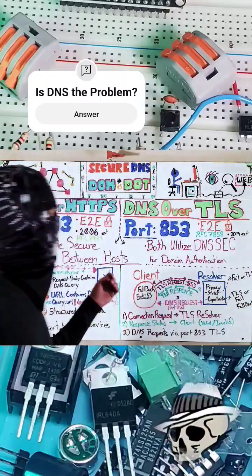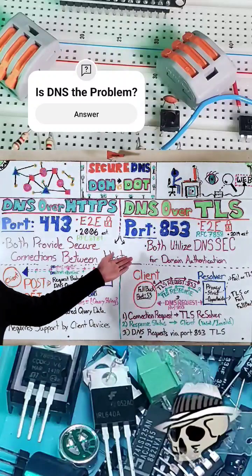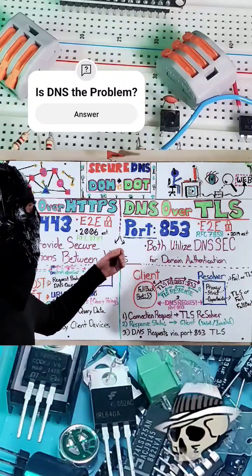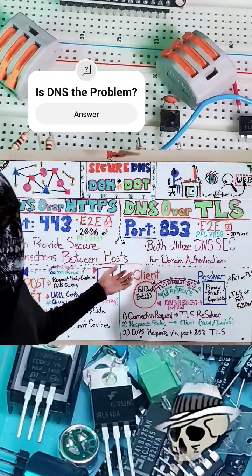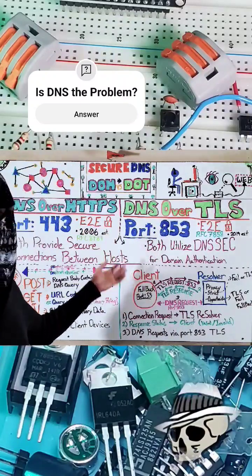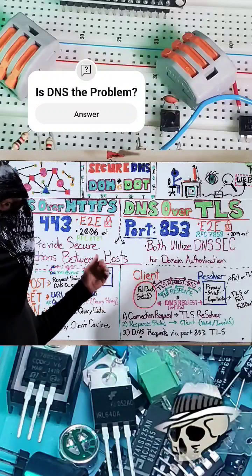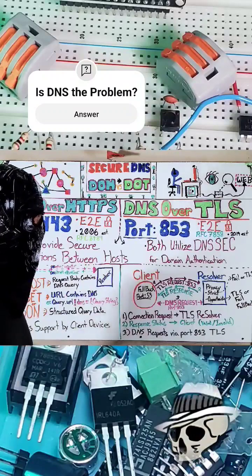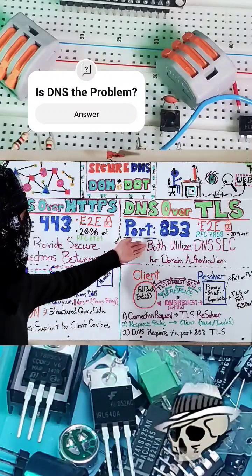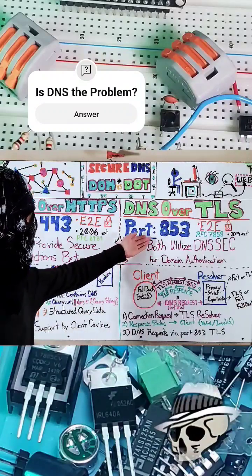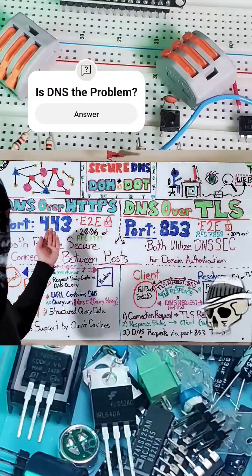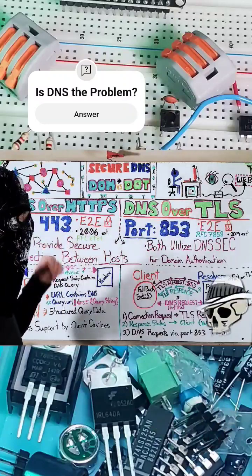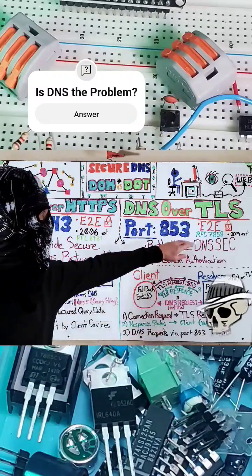The difference with DNS over TLS is that a TLS connection is established first, and then you pass your transmission. Specifically, port 853 is utilized instead of port 443.